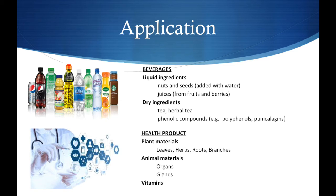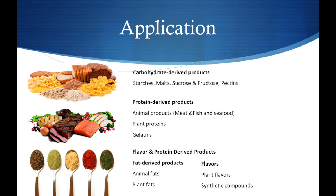The spray dryer is also applicable to health products, for example plant materials such as leaves, herbs, fruits, or branches. It is also possible to powderize animal materials such as glands and organs, and lastly vitamins. It is also applicable for carbohydrate-derived products such as starches, malts, and sucrose, and protein products such as animal products, plant proteins, and gelatin. Other products include fat-derived products such as animal fats, plant fats, and natural and synthetic flavors.